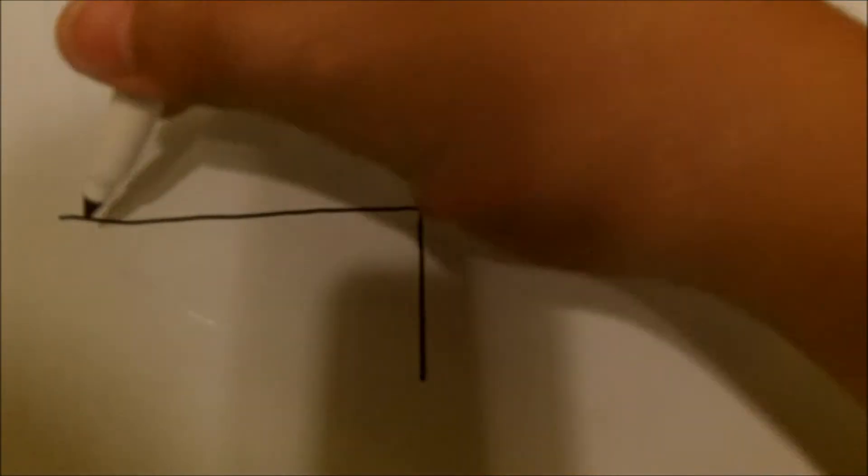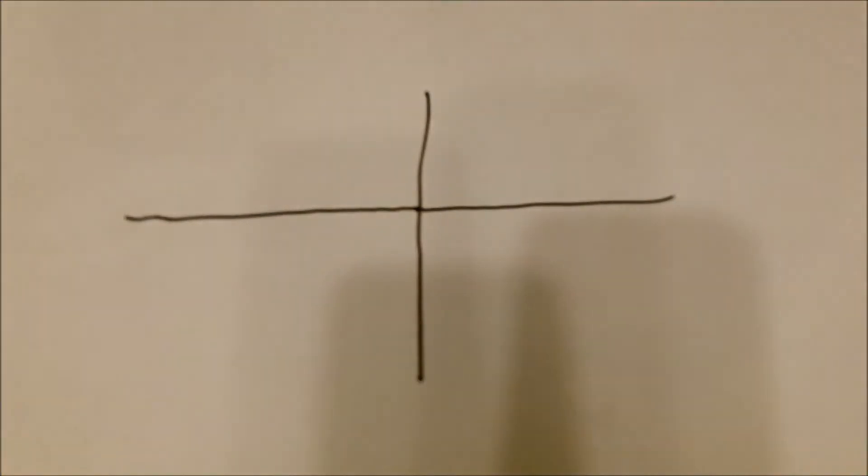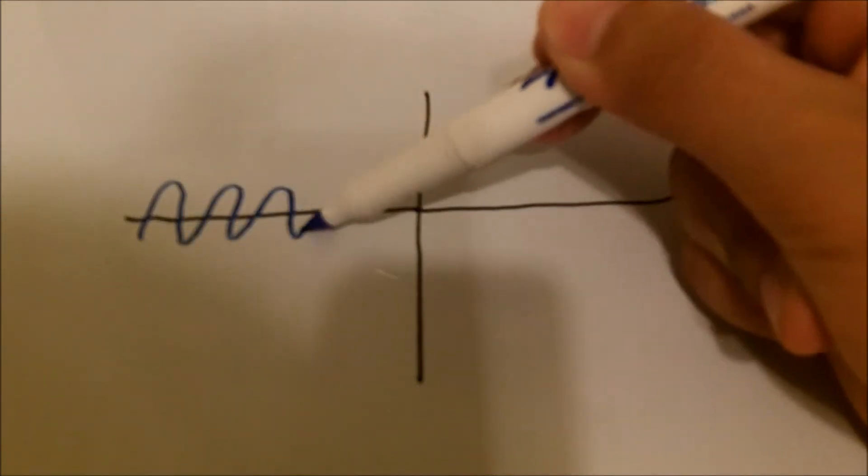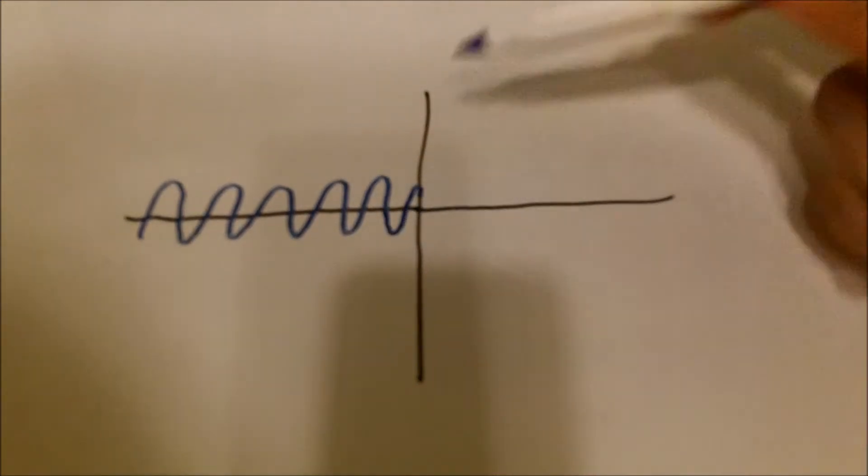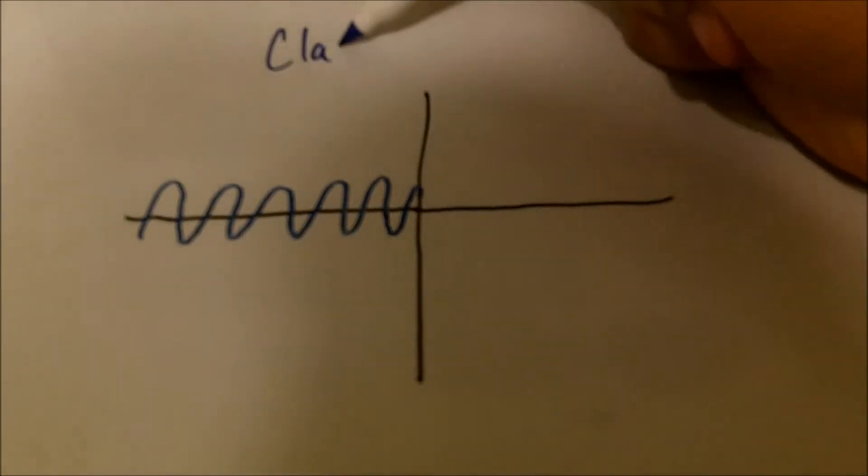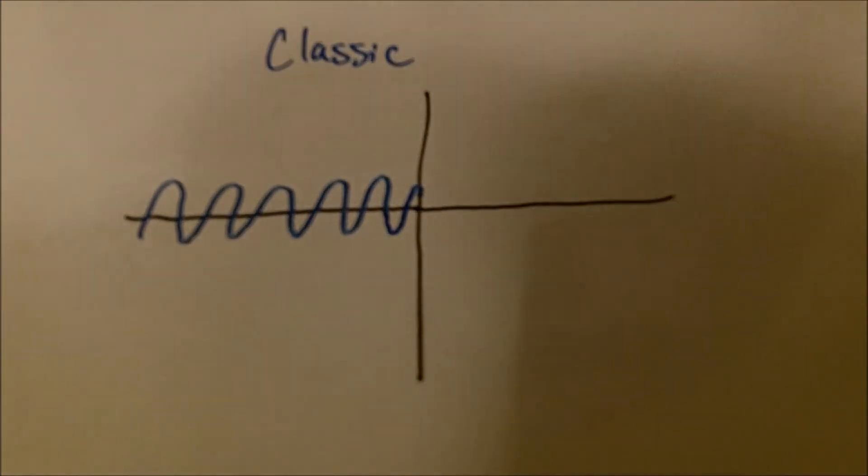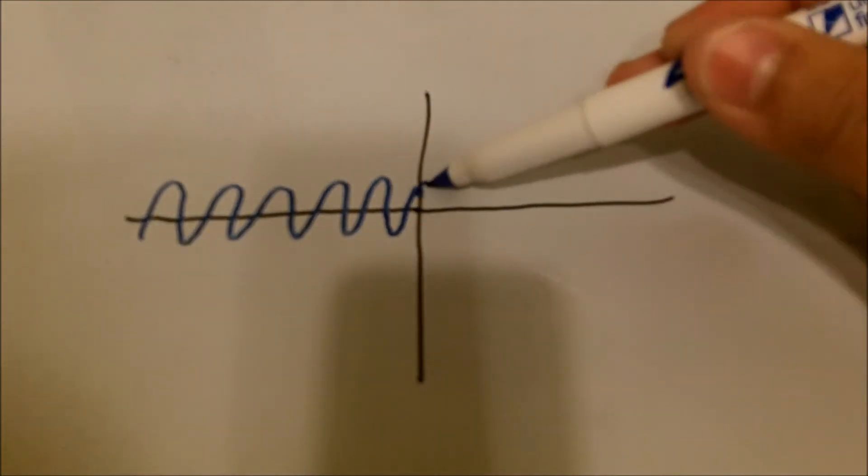Now if we look at one final example here, we have this particle that's moving towards a barrier. Now as we can see in this classical example, it's stopped by the barrier. This is because the energy of the barrier is greater than the energy of the particle.